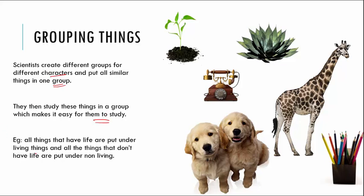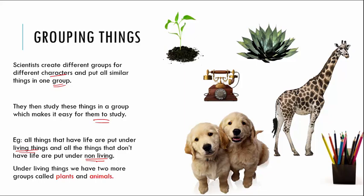For example, all the things that have life are put into living things, and all the things that do not have a life will be put under a group called non-living things. Under living things, there are two more groups called plants and animals. So we first categorize things into living and non-living, and under living things we again categorize them into plants and animals.